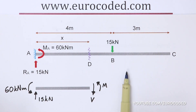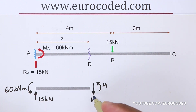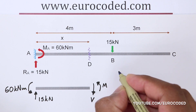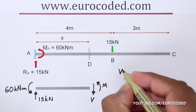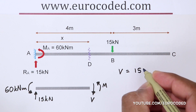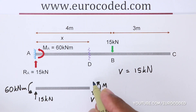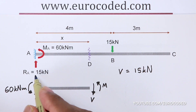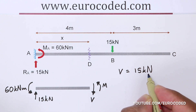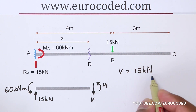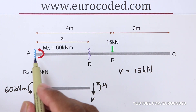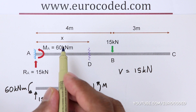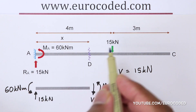If we consider vertical equilibrium, we have two vertical forces: the reaction vertical force and our shear force. Therefore for vertical equilibrium we can write V is equal to 15 kN. The shear force V is acting downwards and the vertical reaction force of 15 kN is acting upwards. This is valid for any x value between A and B — in other words any x value between 0 and 4 meters.